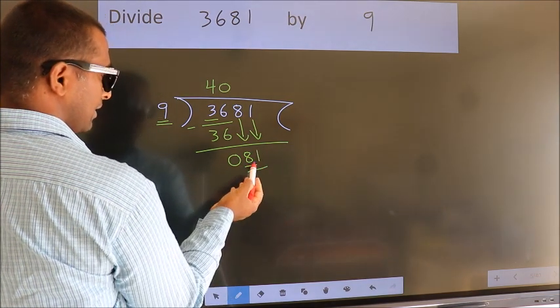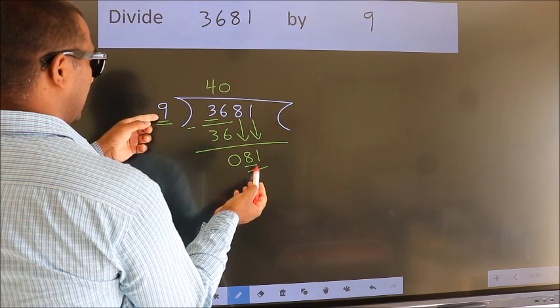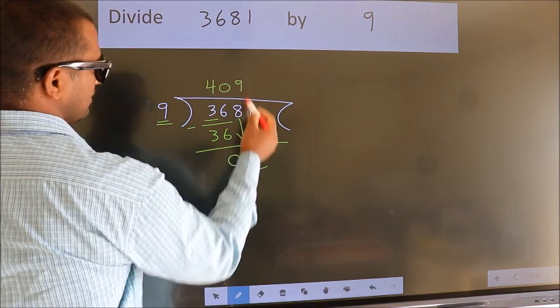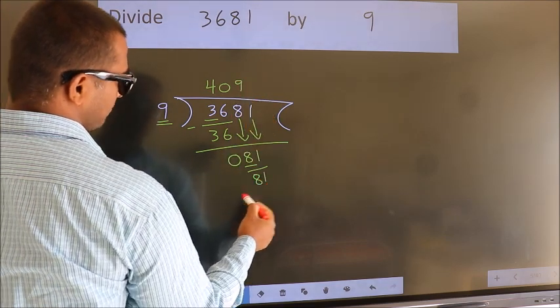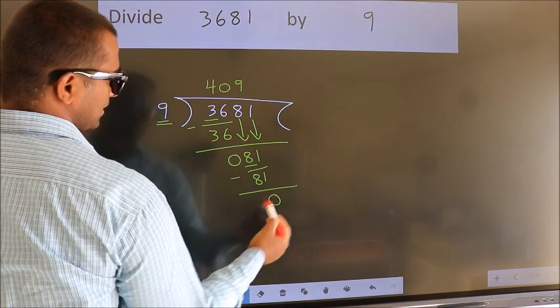So, 81. When do we get 81? In the 9 table, 9 nines 81. Now we subtract. We get 0.